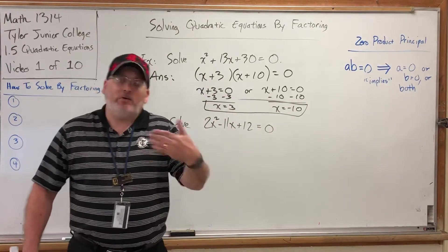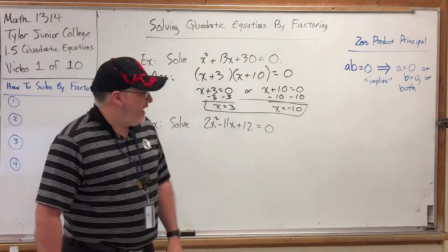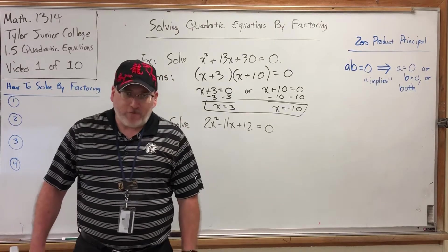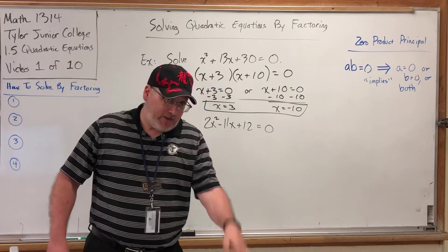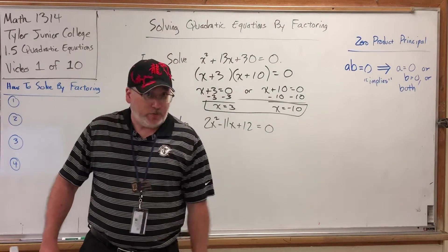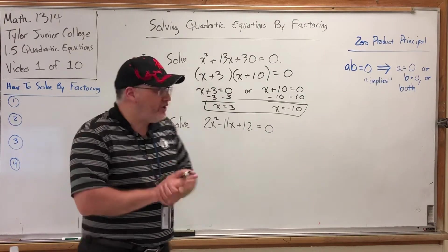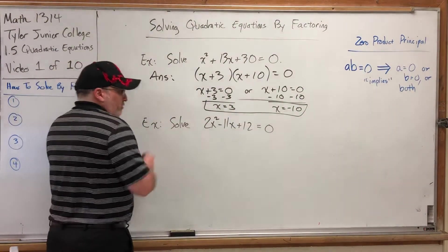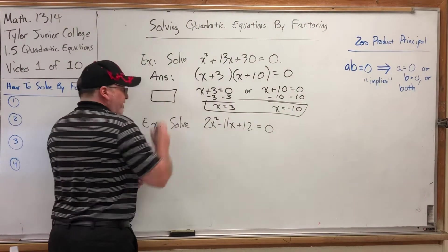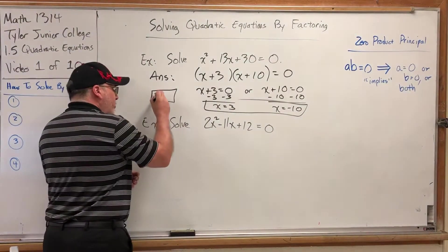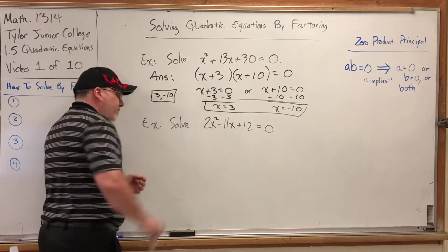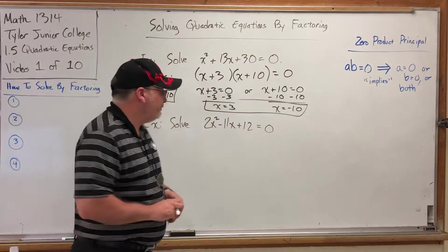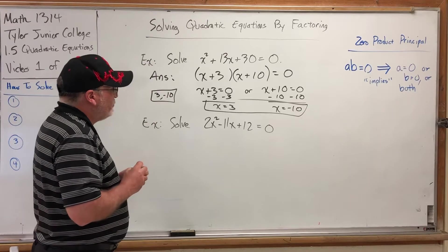Negative 3, negative 10. Now, if you're watching this video and using an online homework platform, I'm speaking specifically to my class that these videos are made for but anybody is welcome to watch, when you put these answers in your homework, it will say to separate them by a comma, so you would just type negative 3, comma, negative 10. You would not type the x equals.